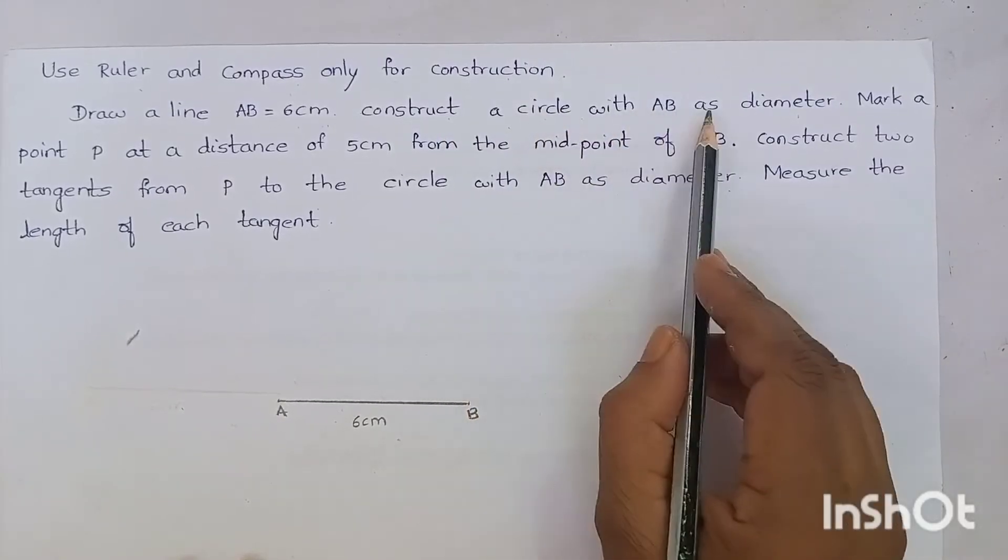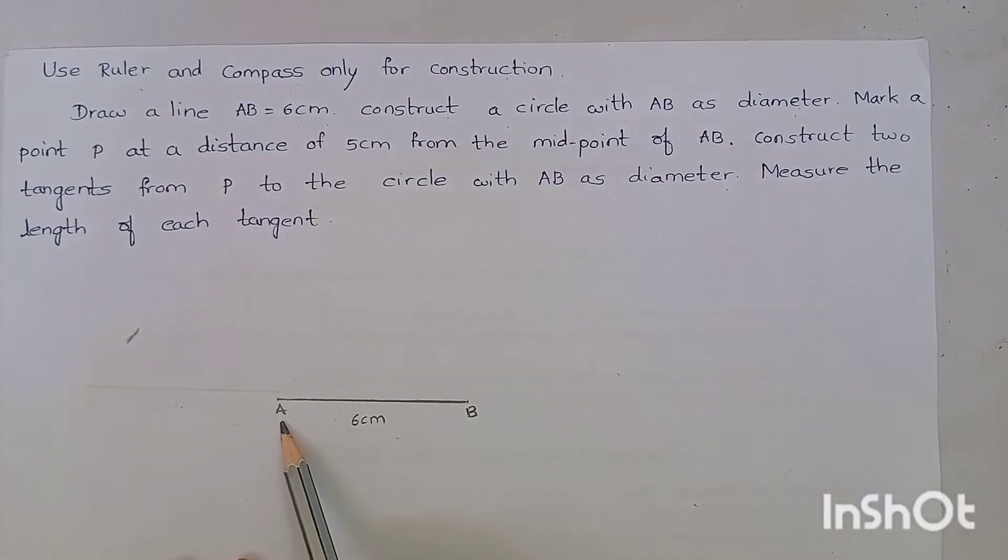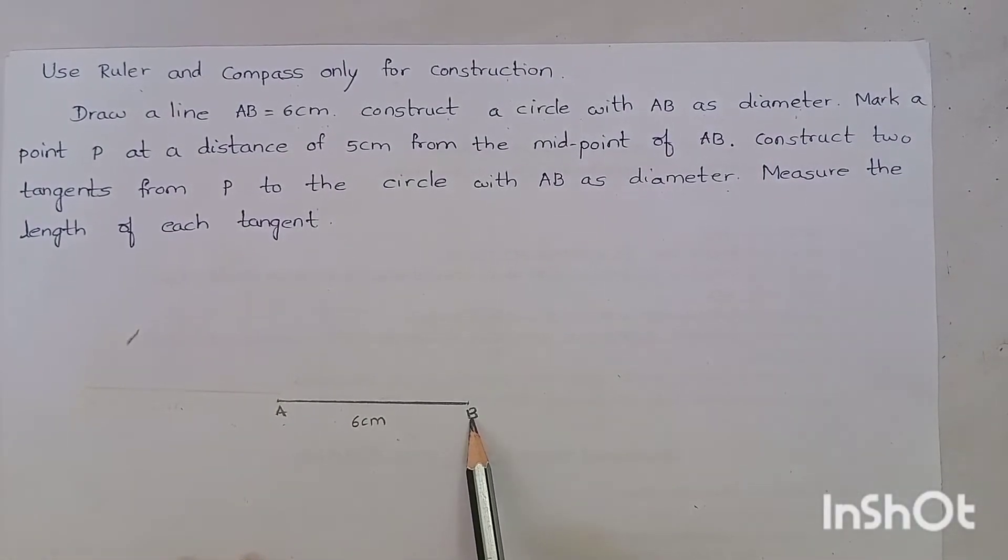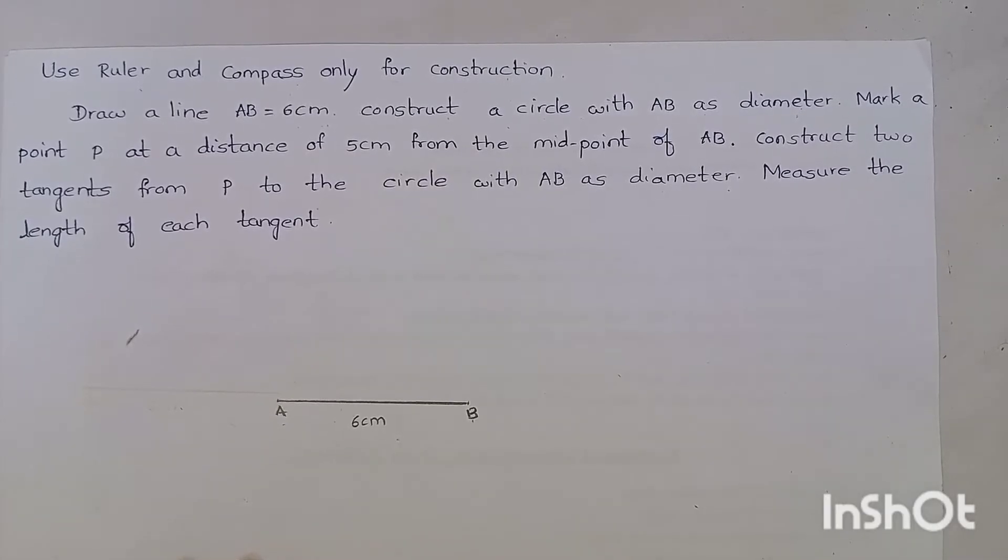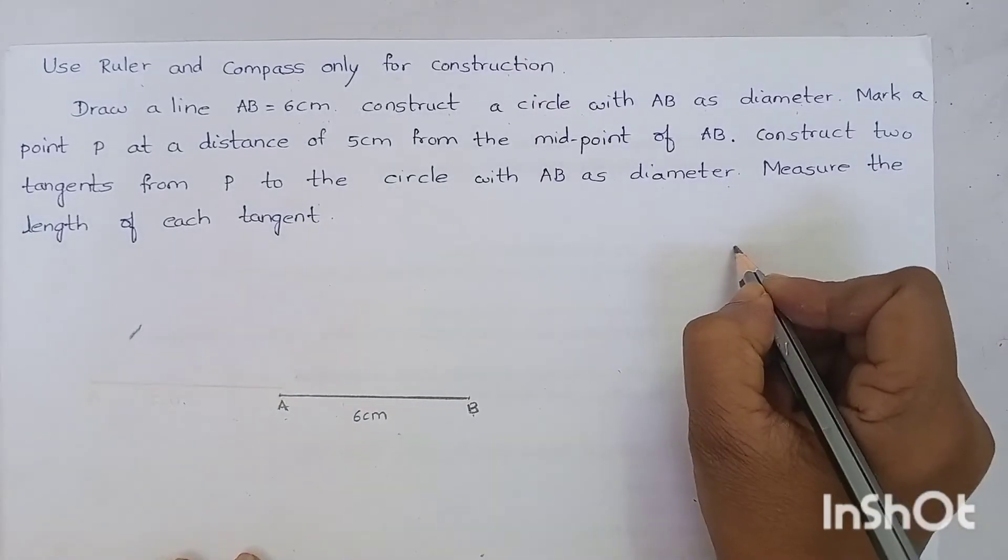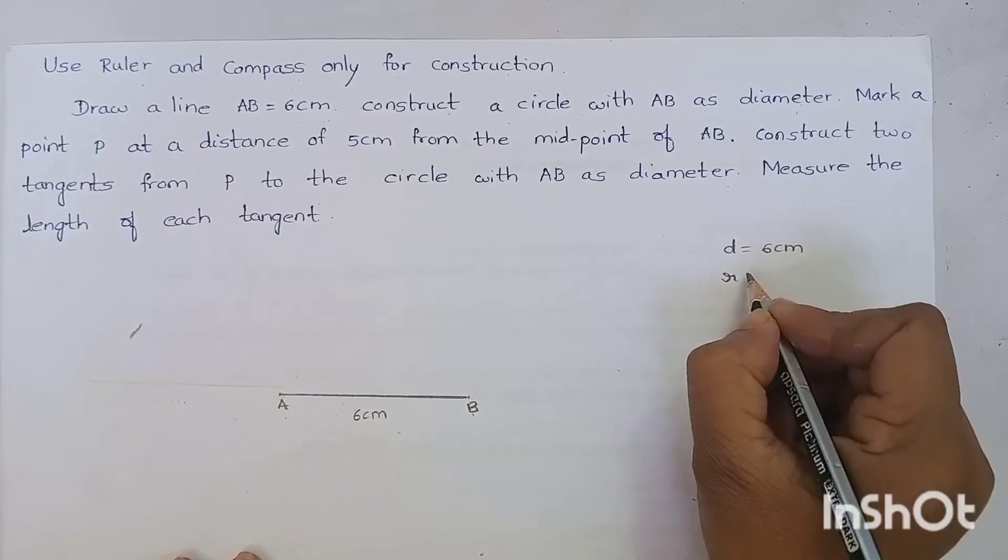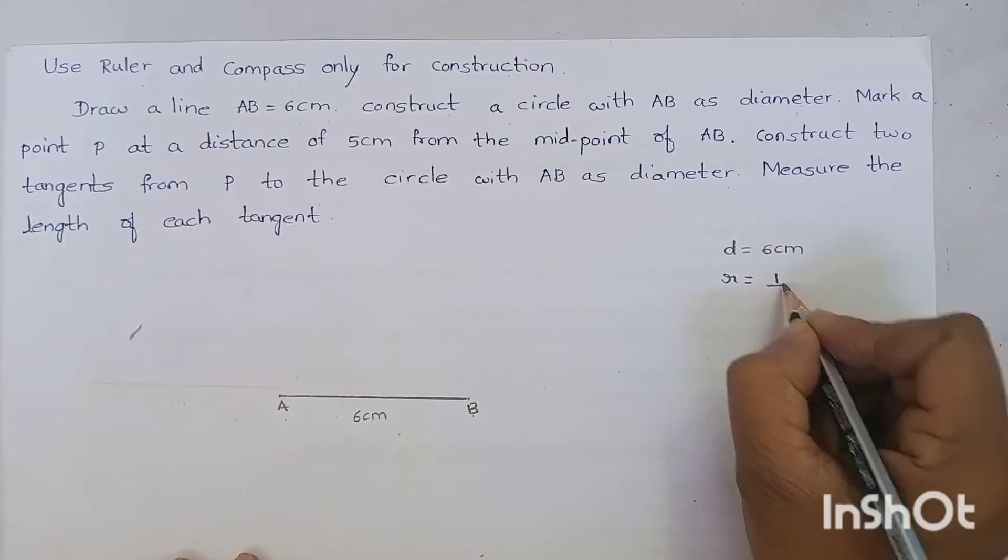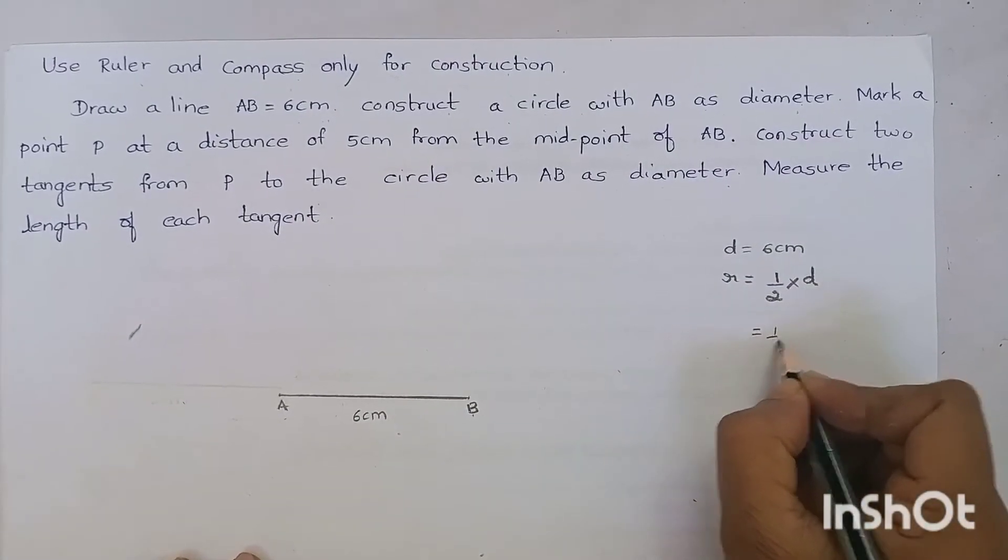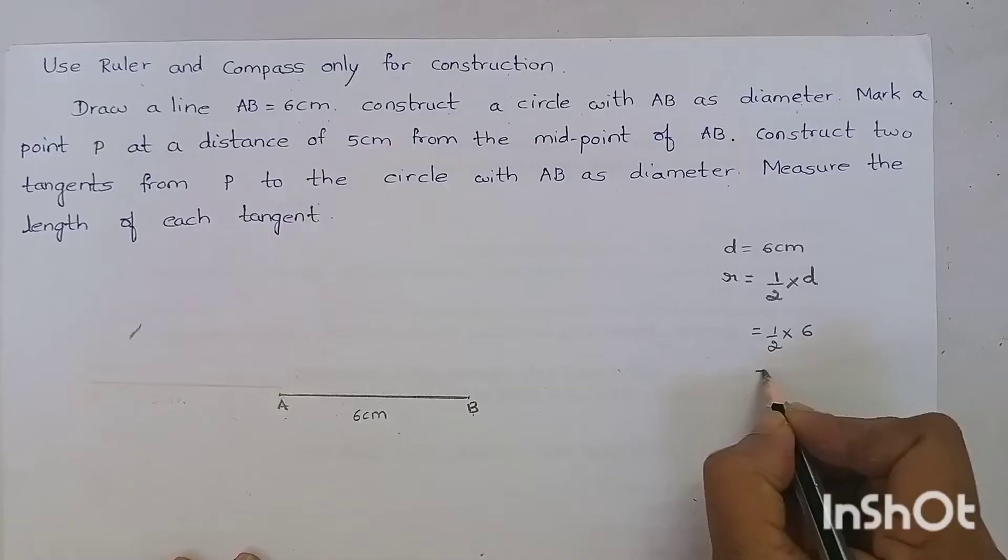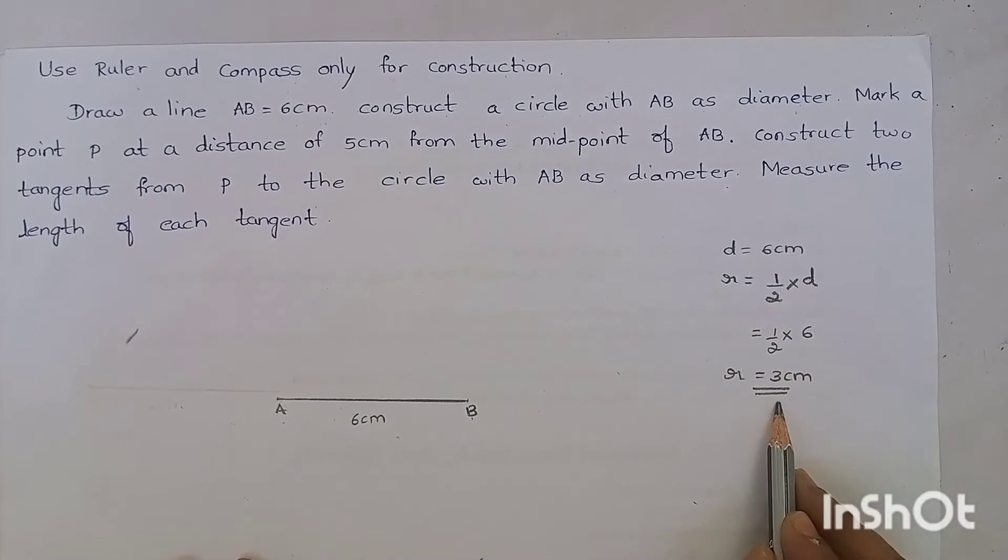Construct a circle with AB as diameter. We have to construct a circle with AB as diameter. We know that radius is half of diameter, right? That is, diameter is 6 cm. Then radius is what? Half of diameter, that is half of 6, that is 3 cm. Isn't it? Radius is 3 cm.